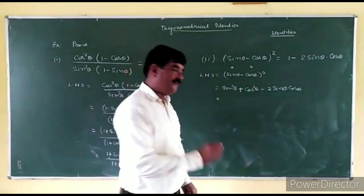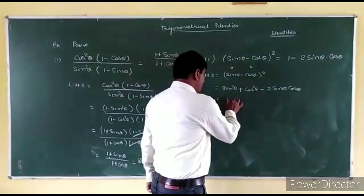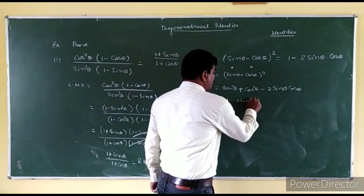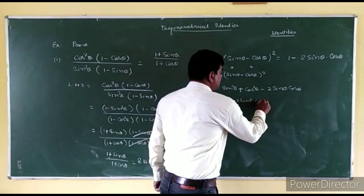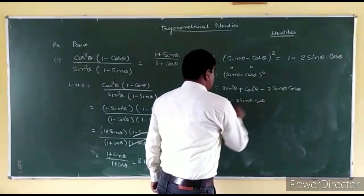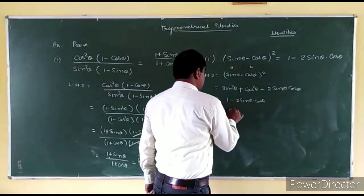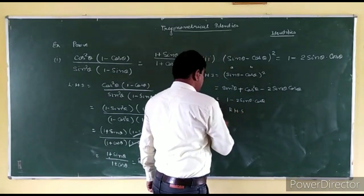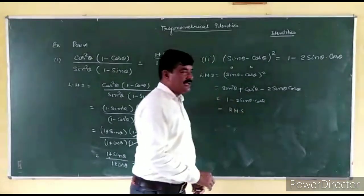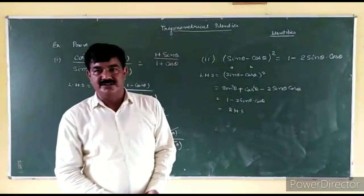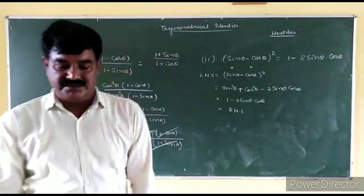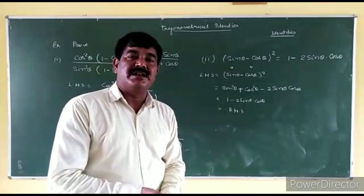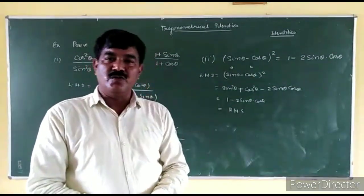This gives us 1 minus 2 sin theta into cos theta. This is the first formula I told you. Therefore, the left-hand side is equal to the right-hand side. This is the way you can prove the identity.